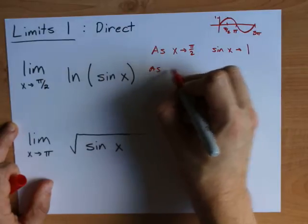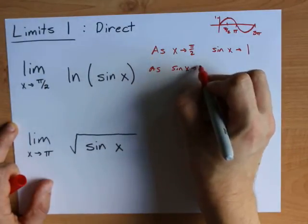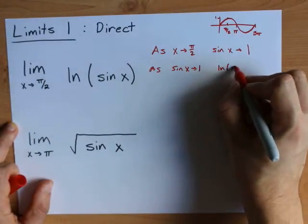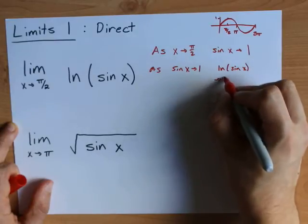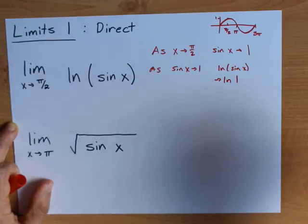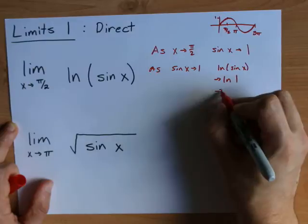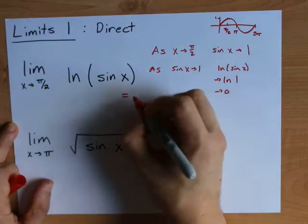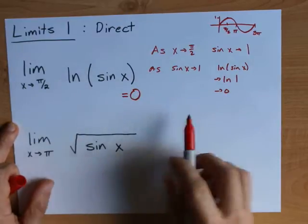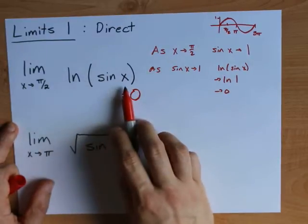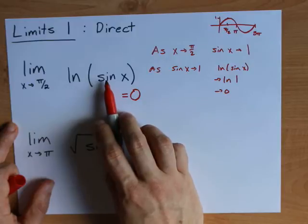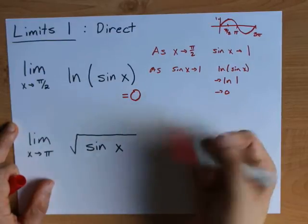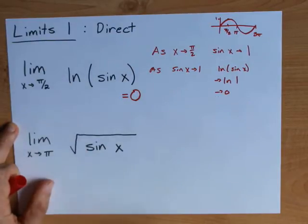But as sine x approaches 1, the ln of sine x approaches the ln of 1, which is 0. So this limit, no matter which way you take x from, left or right, is 0. Because you're always taking the ln of 1, because you're always taking the sine of pi over 2 and getting 1. The limit is 0 here.